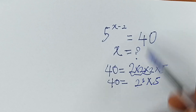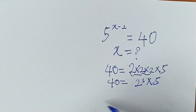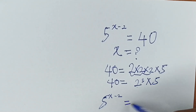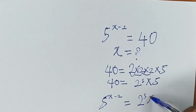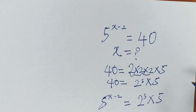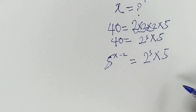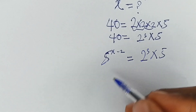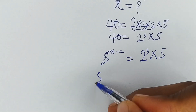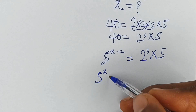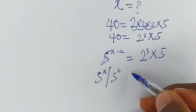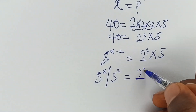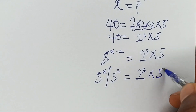Now let's replace 40 with this in the equation. So we say 5 raised to the power x minus 2 is equal to 2 raised to the power 3 times 5. Now let's express 5 raised to the power x minus 2 as 5 raised to the power x divided by 5 raised to the power 2, and this is equal to 2 raised to the power 3 times 5.